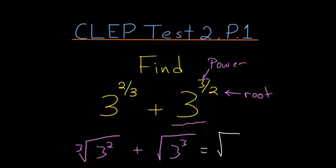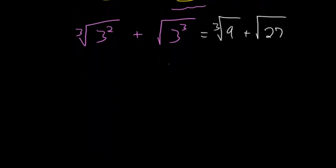So if we simplify this, it's the cubed root of 3 squared is 9, plus the square root of 3 cubed, which is 27. So putting the cube root of 9 into the calculator,